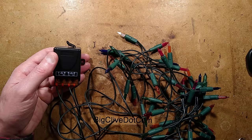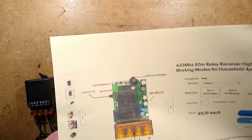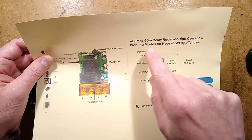I've featured remote control receivers from eBay in the past, but this one was a bit more interesting because it's described in the listing as 433 megahertz, a common frequency here for remote controls. It's a 50-meter relay receiver, high current, for working modes or household appliances.